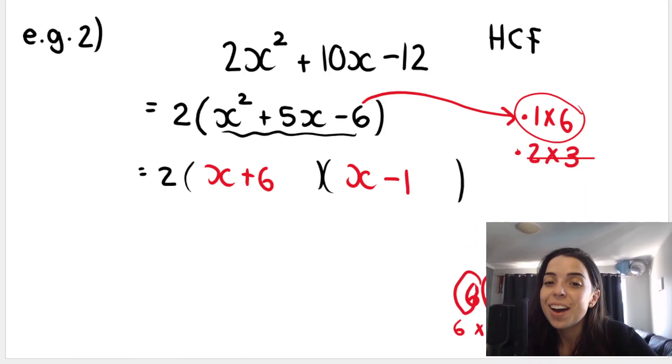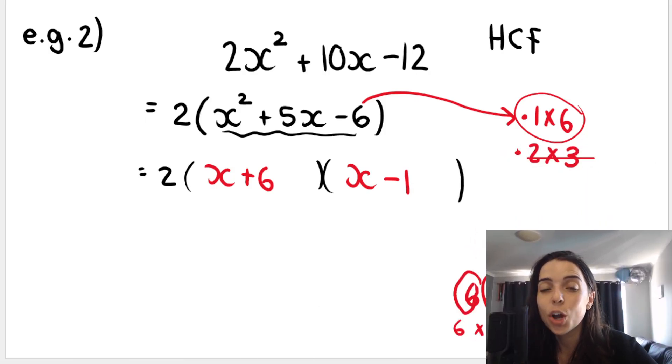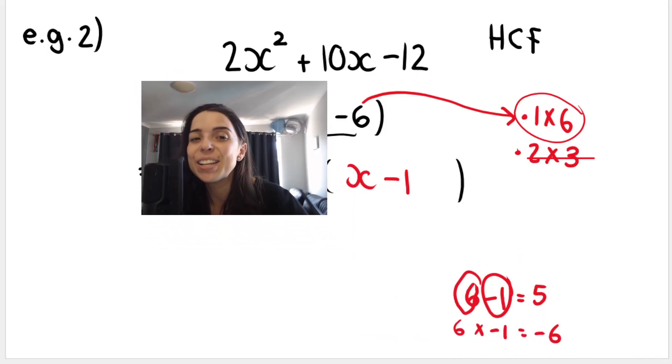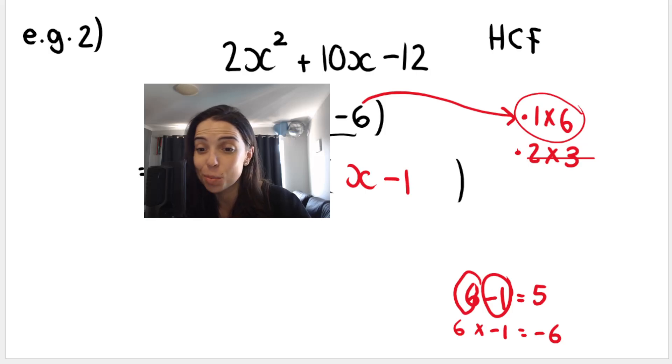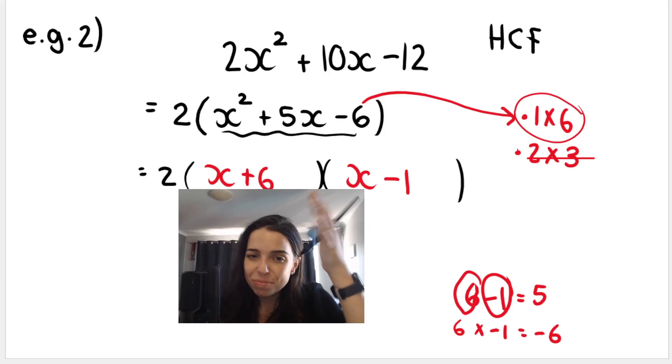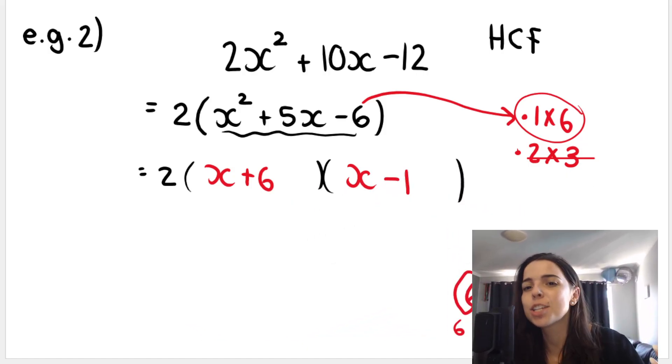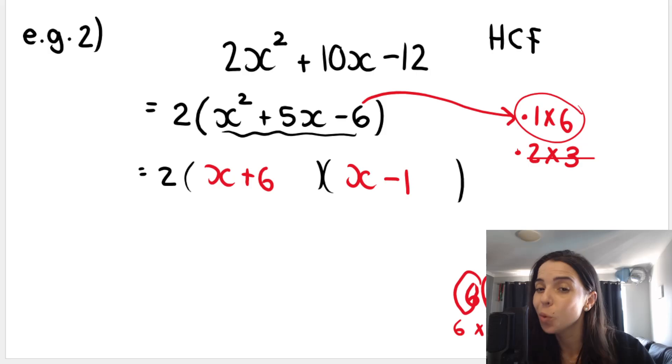In the next video, I take a look at trinomials where the coefficient of the squared term is not a highest common factor. So we can't take it out as a highest common factor. So we can't use this normal, more basic method. Can't take it out as a highest common factor. We need to do a little bit more work. I'll see you in the next video. Bye, everyone.